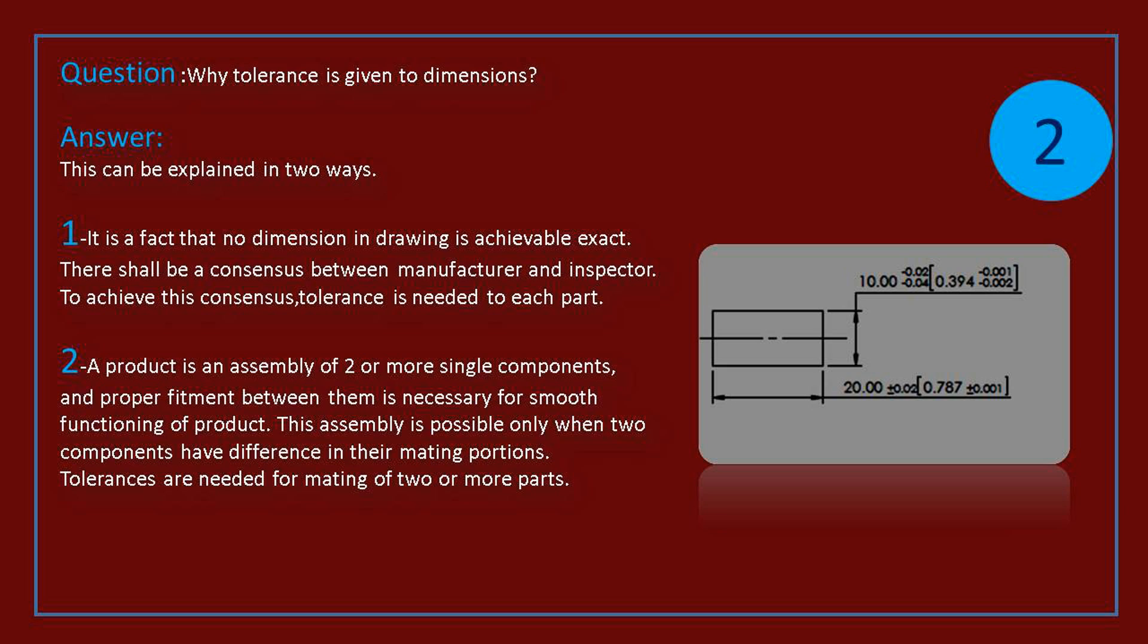A product is an assembly of two or more single components, and proper fitment between them is necessary for smooth functioning of product. This assembly is possible only when two components have difference in their mating portions. Tolerances are needed for mating of two or more parts.